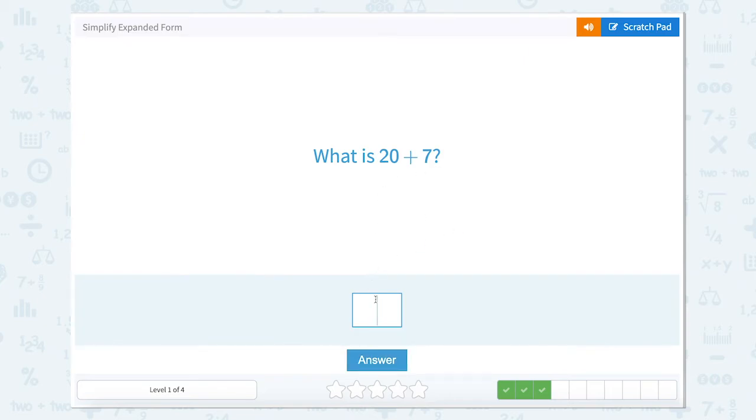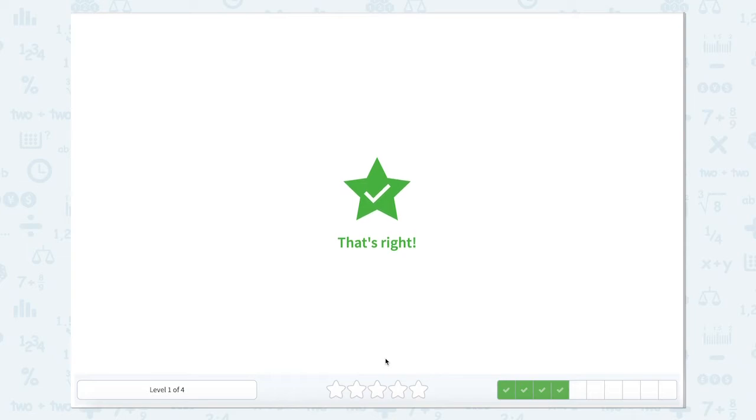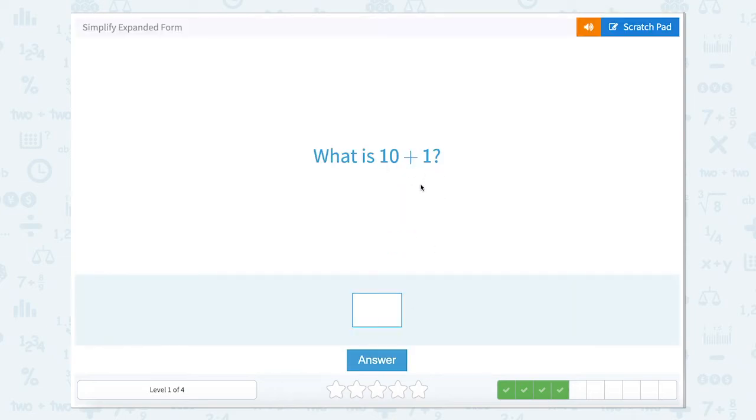20 plus 7? Well, 20 plus 7 is 27. 10 plus 1, we can think about our 10s place and our 1s place. Well, our 1 would go into our 1s place, and our 10 goes into our 10s place, so that would be 11.